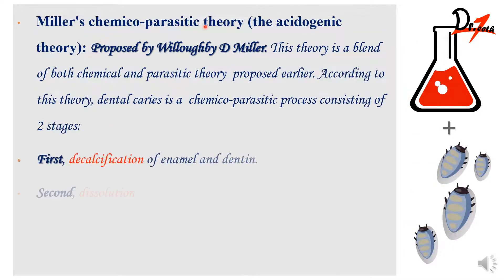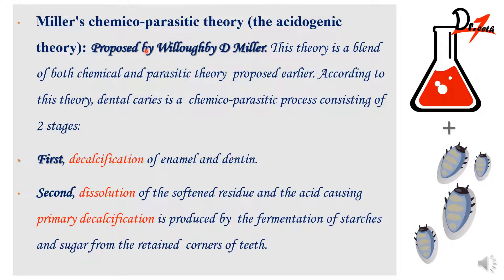Now we have the famous Miller's chemical parasitic theory, which we still consider as the most important backbone of etiological understanding in dental caries. It was proposed by W.D. Miller and is called chemical parasitic because it combines both the chemical theory and the parasitic theory. In his theory, he used two stages: first, the decalcification of enamel and dentine, and then dissolution of the softened residue. Primary decalcification was produced by fermentation of sugars retained in the mouth after eating.